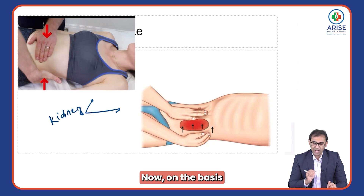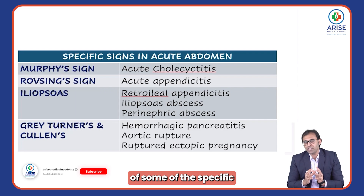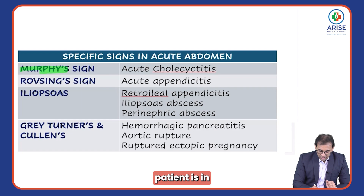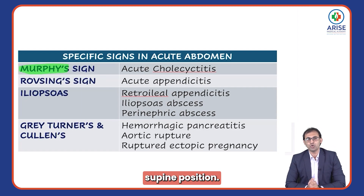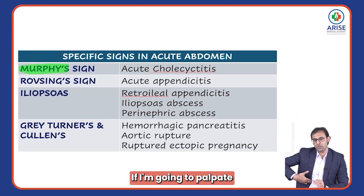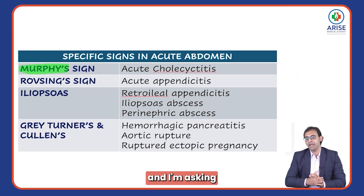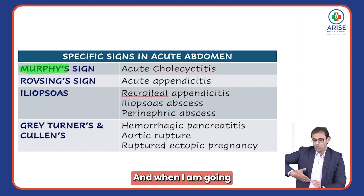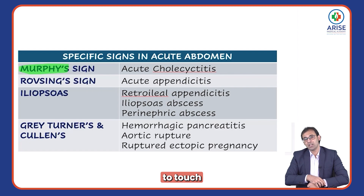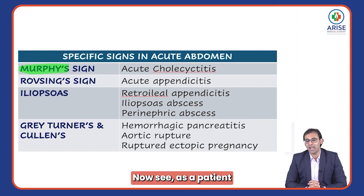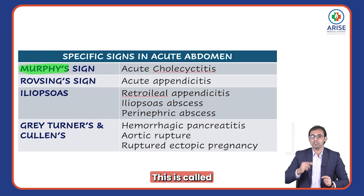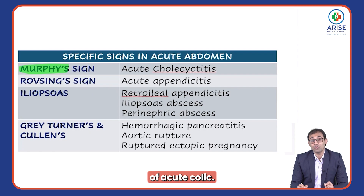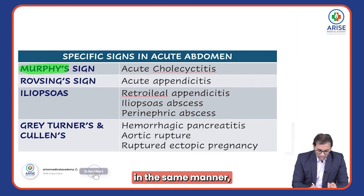Now on the basis of some specific signs in acute abdomen — when I talk about Murphy's sign, the patient is in the supine position. I palpate in the ninth intercostal space and ask the patient to take a deep breath. When my fingers touch the inflamed epithelium of the gallbladder, the patient experiences respiratory arrest. This is Murphy's sign, seen in a case of acute cholecystitis.